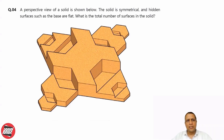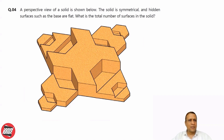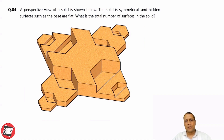A perspective view of a solid is shown. The solid is symmetrical, and hidden surfaces such as Bs are flat. We need to know the total number of surfaces in the given solid.